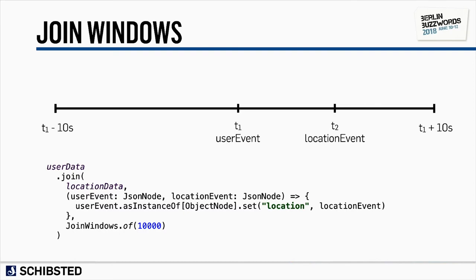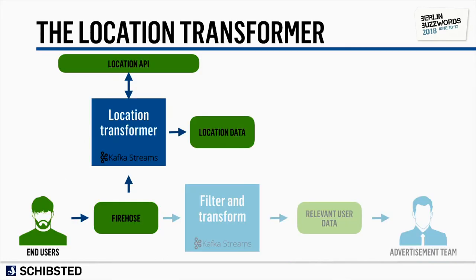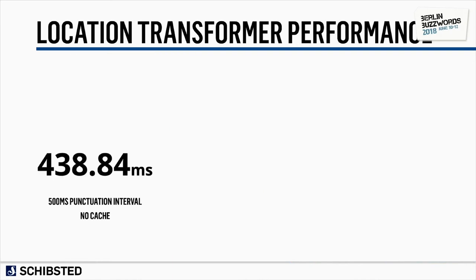We picked a 10-second window because if we don't see the location event after 10 seconds, it's no longer usable for advertising purposes. So let's deploy it and see what works and what doesn't. We put this into production, and I can say it really worked — quite well, in fact. With the 500 millisecond punctuation interval, we had between 400 and 500 milliseconds of extra latency per event.